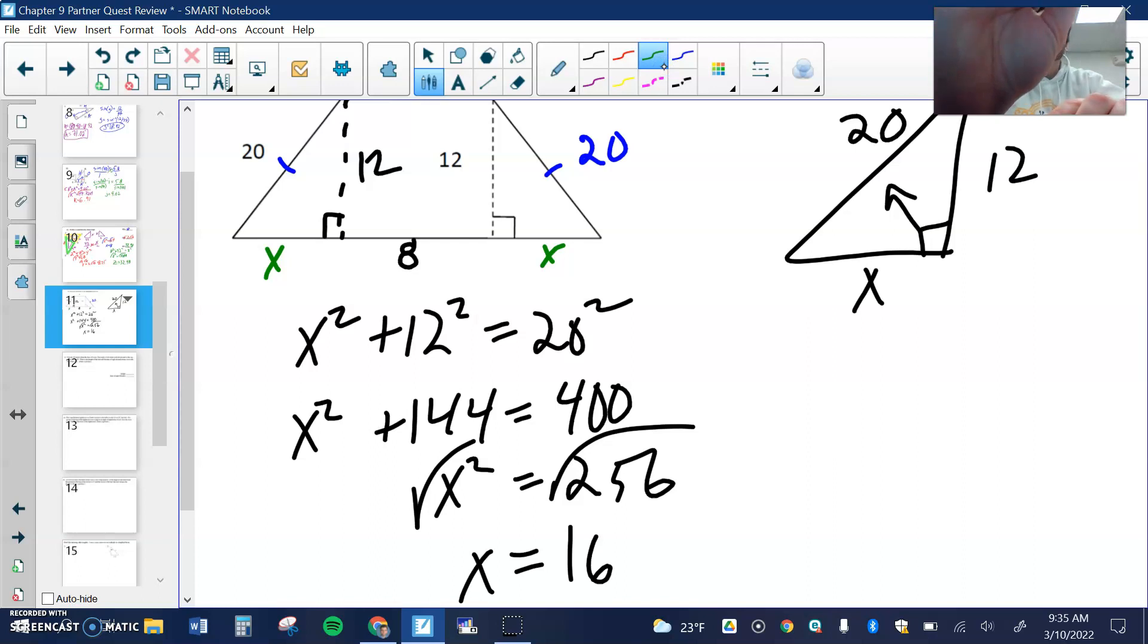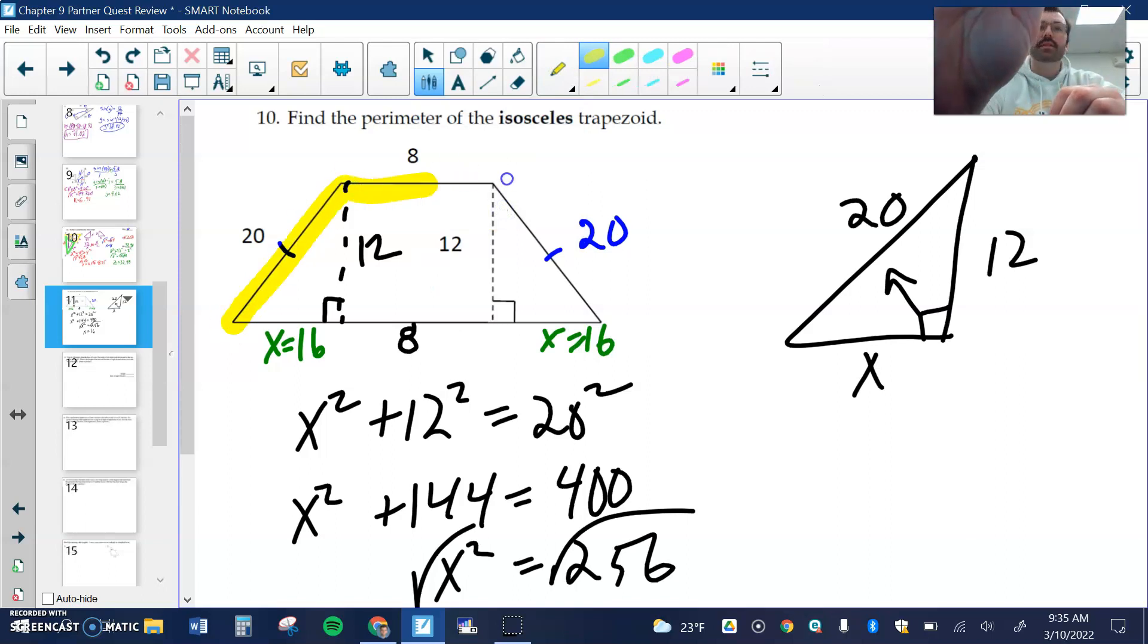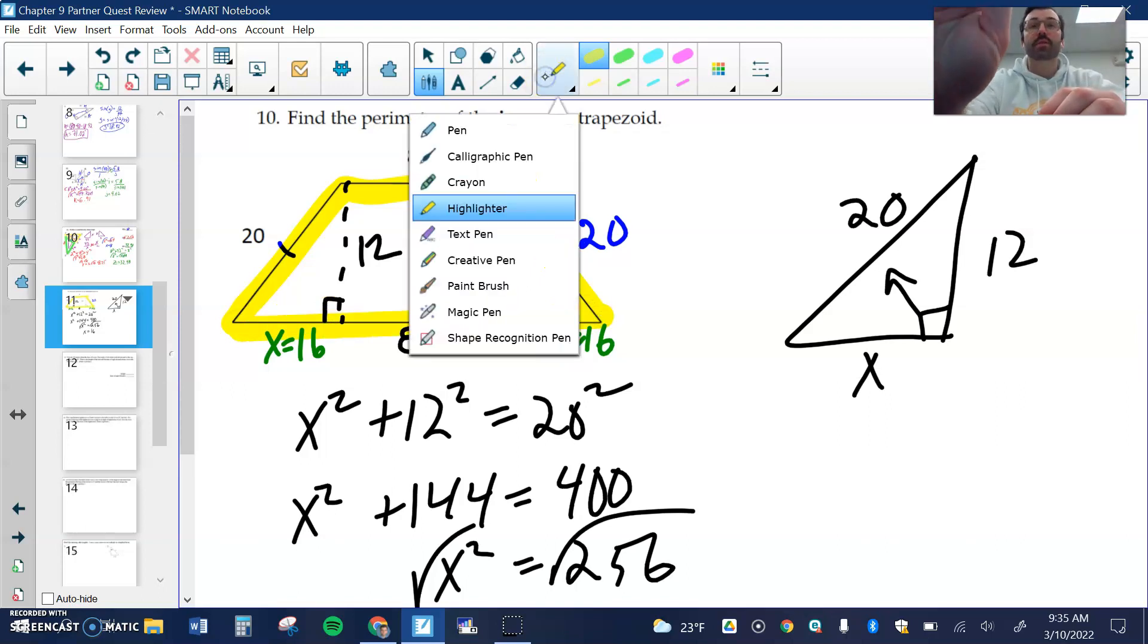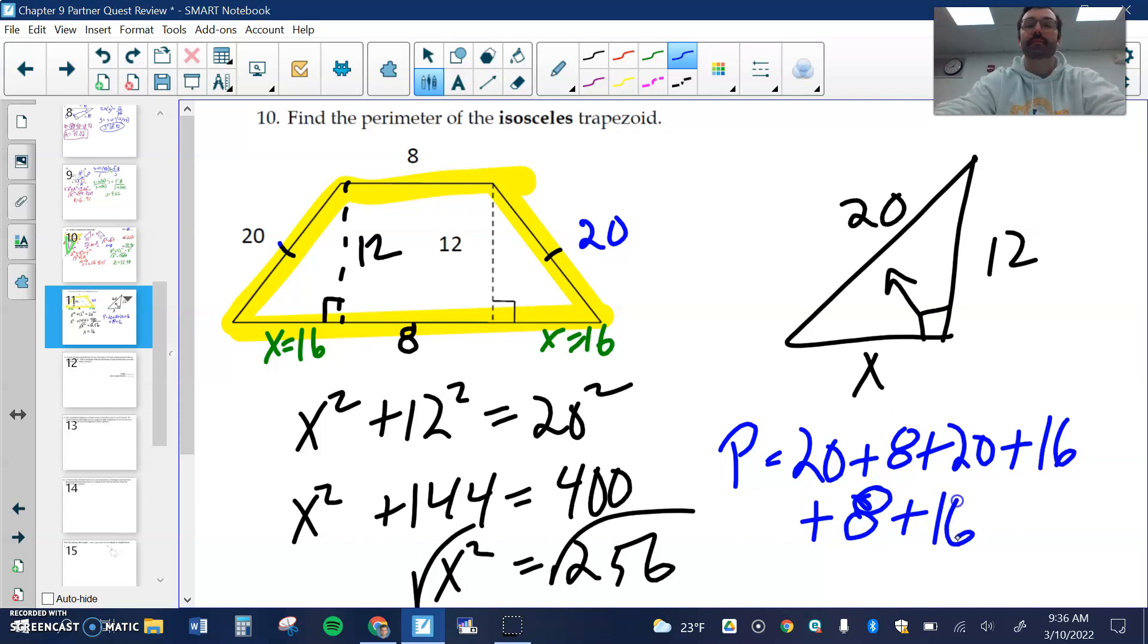So I know that both of these pieces are now 16. Again, for perimeter I want to find the distance around a shape, so all I care about is this distance in yellow here. If I were to total up those distances, the perimeter would be 20 plus 8 plus 20 plus 16 plus 8 plus 16 again, and that would give me 88.